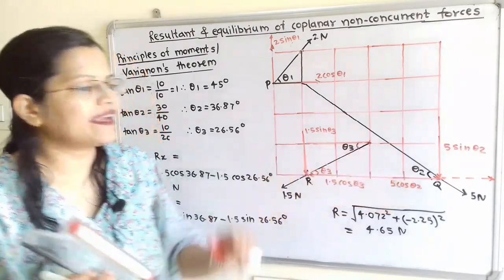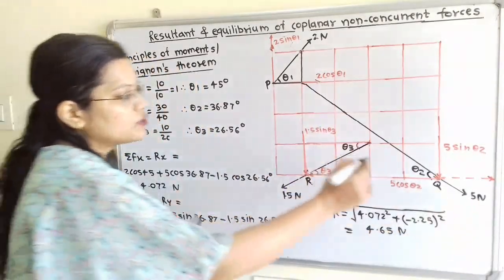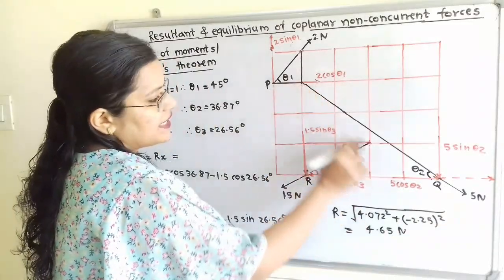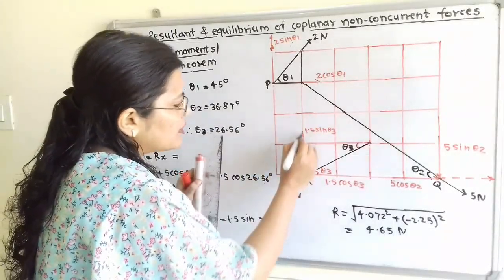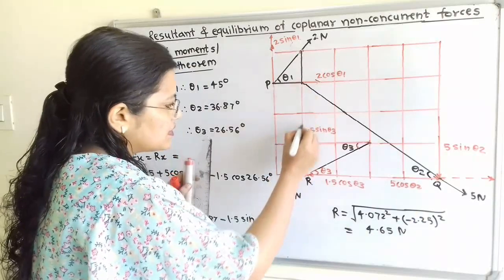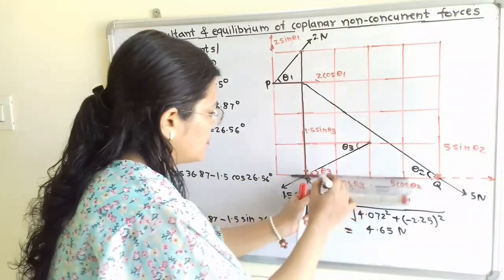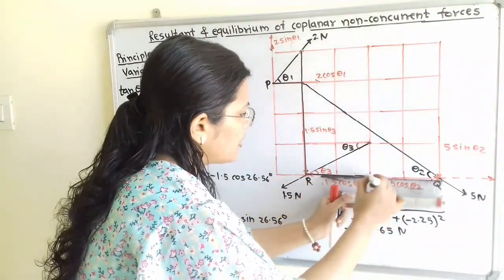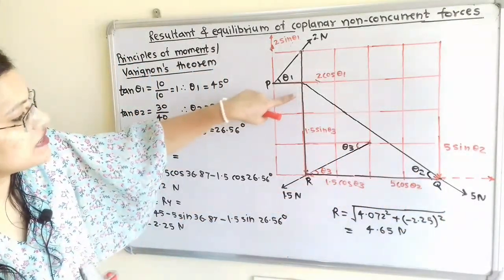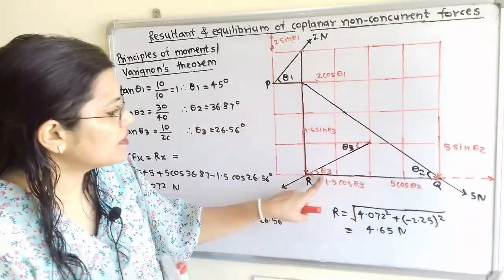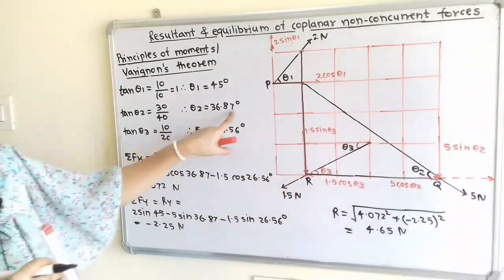Now we find θ2. We find the corner points along the 5N force — point Q and the second point — and join them along the sides of the square. From this triangle, tan(θ2) equals opposite side (3 sides = 30) over adjacent side (4 sides = 40), so 30/40 gives θ2 = 36.87°.